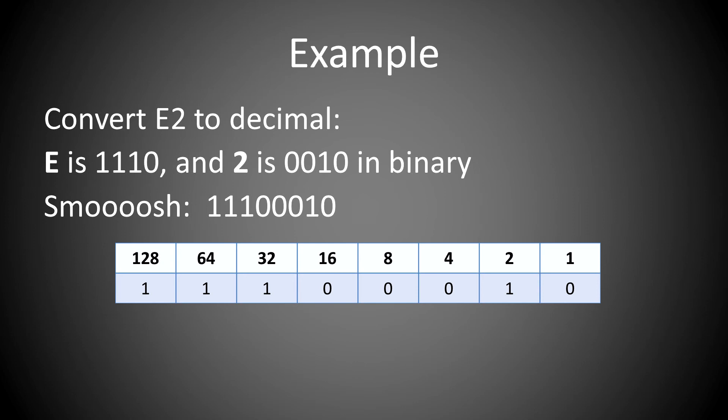Smoosh that all together, which gives 11100010. Put that into the binary conversion chart. Simply do 128 times 1 plus 64 times 1 plus 32 times 1 plus 16 times 0 and on until the end of the table, which gives the result of 226.